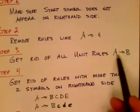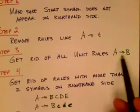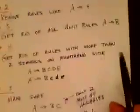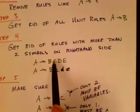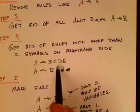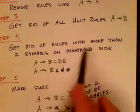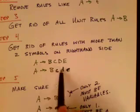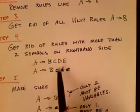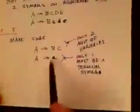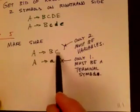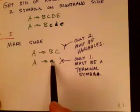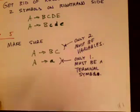Next, we're not allowed to have any more or fewer than two non-terminals on the right-hand side. We call a rule with a single non-terminal on the right-hand side a unit rule, and we need to get rid of all unit rules where one non-terminal goes to another. We're also not allowed to have more than two symbols on the right-hand side, and finally, if there are two symbols they must both be non-terminals, while a single symbol must be a terminal.